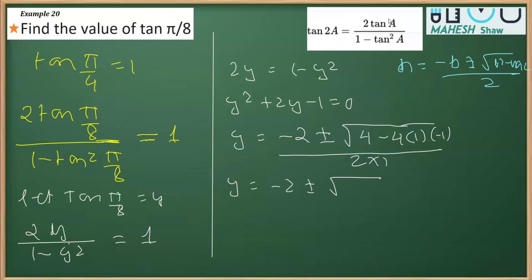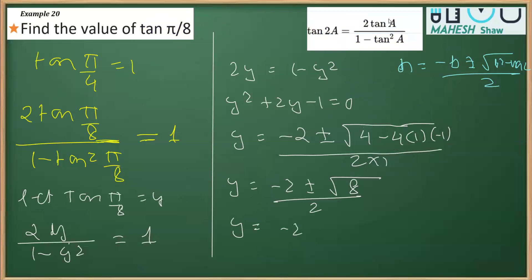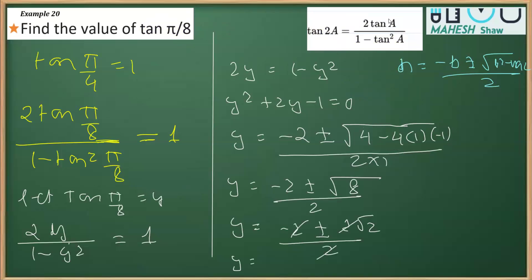Under the radical we have 4 + 4 = 8, so we get y = (−2 ± √8) / 2. Since √8 = 2√2, this becomes y = (−2 ± 2√2) / 2. Taking 2 as common factor and cancelling, we get y = −1 ± √2.